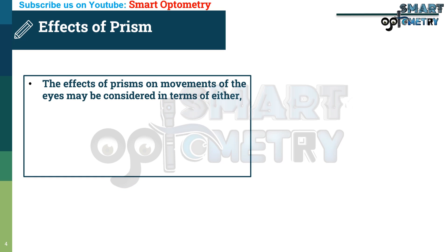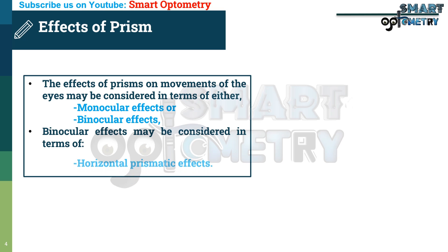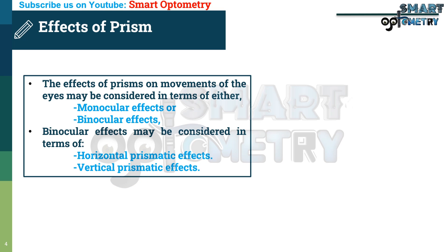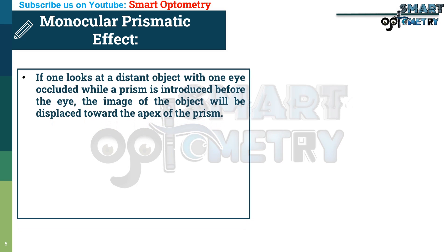The effects of prism on movements of the eyes may be considered in terms of either monocular effects or binocular effects. Binocular effects may be considered in terms of horizontal prismatic effects and vertical prismatic effects.